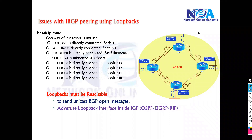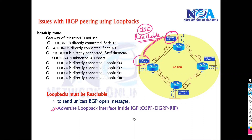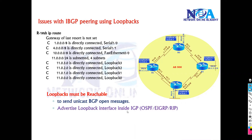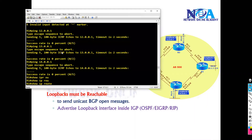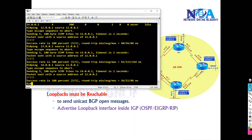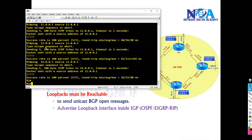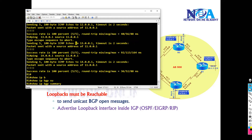Whenever you are trying to peer with loopbacks, make sure that those loopbacks are reachable, because the loopbacks are not directly connected. In order to provide reachability, those loopbacks need to be advertised in any one of the IGP routing protocols — in our example we did that in OSPF. Based on that, if you try to verify we do have reachability, so as per my configuration it seems correct and I should expect the neighborship.